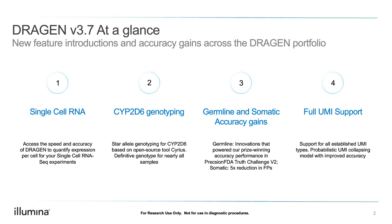CYP2D6 genotyping is something we are proud to integrate into our solution, making it easier for customers to run this type of genotyping in addition to other analysis on their whole genome samples. As always, we are trying to improve our existing pipelines — we'll talk about improvements to the germline and somatic pipelines. From our previous version, we are also expanding our UMI support for specific panels. When we say full UMI support, we'll explain what that means and how we're expanding scope to third-party assays.